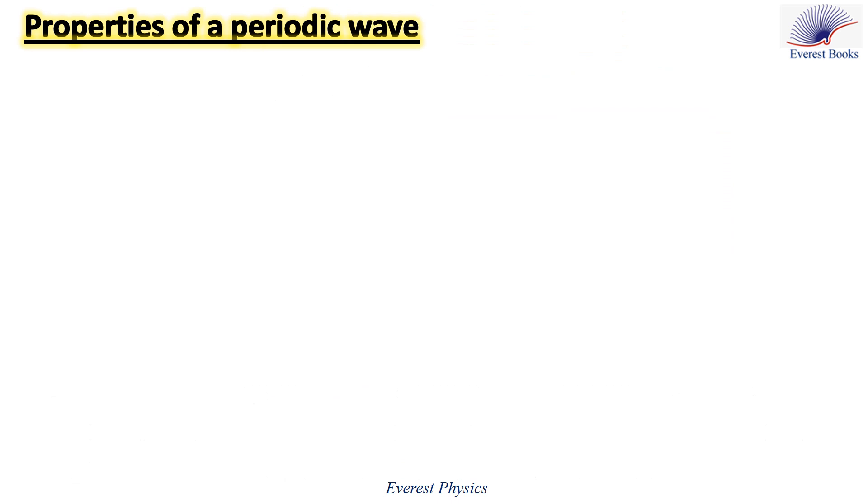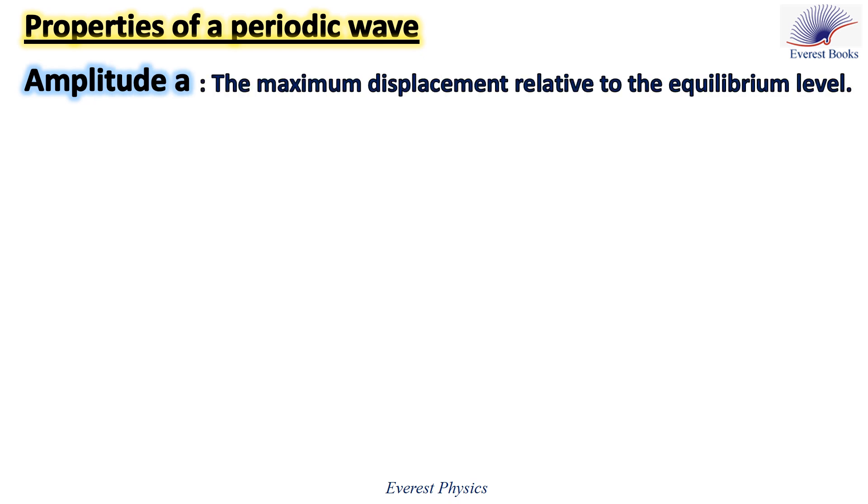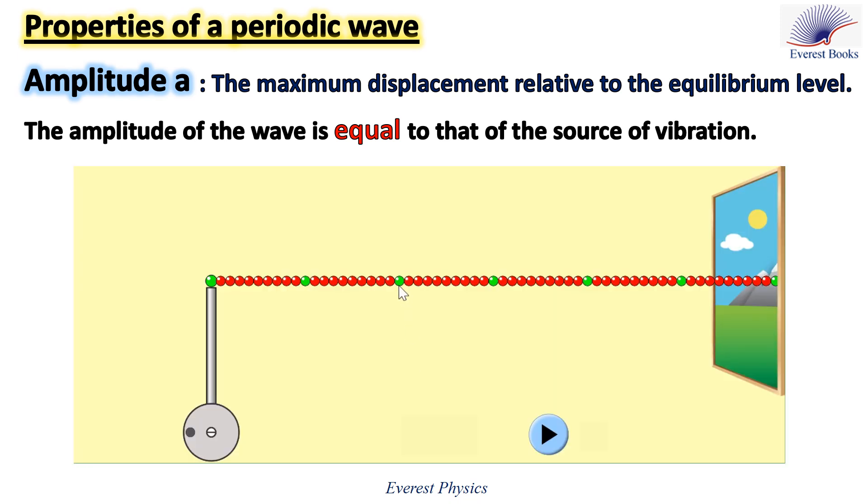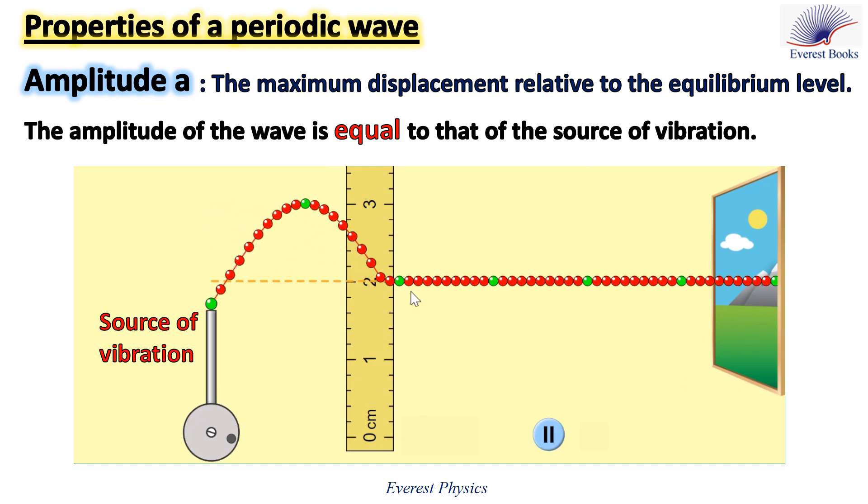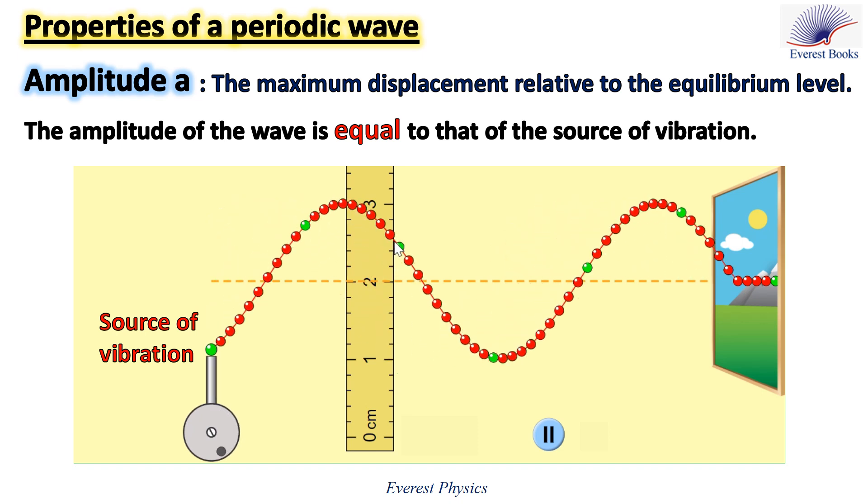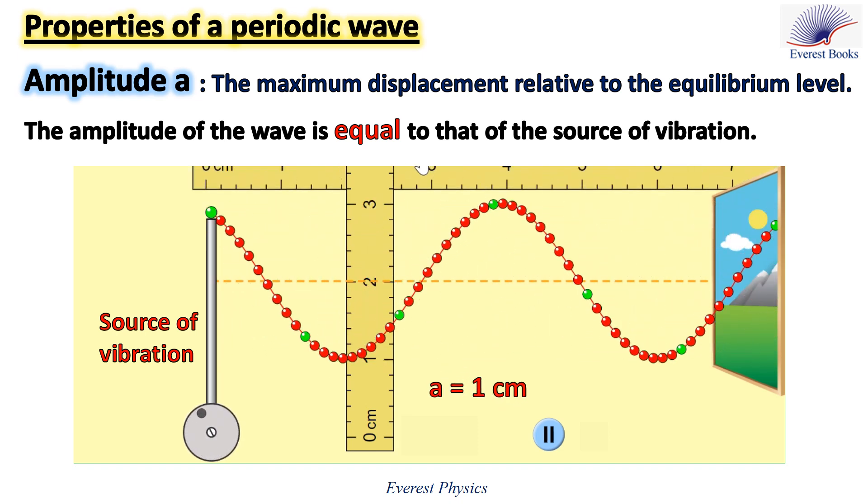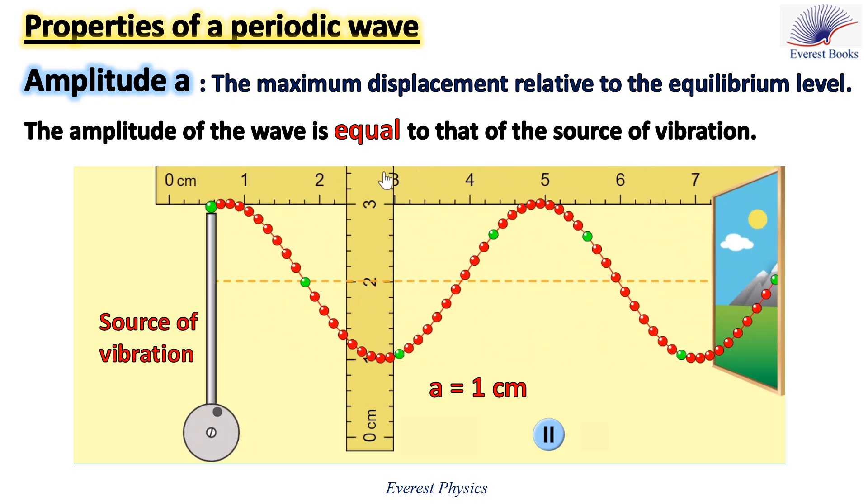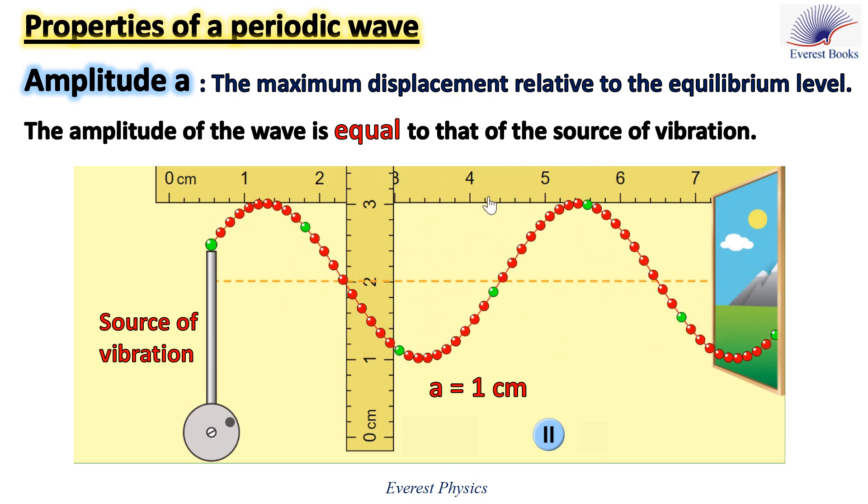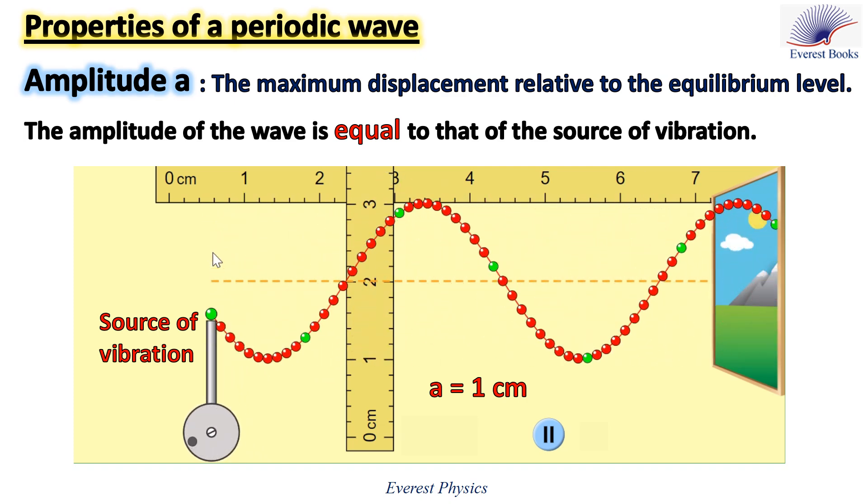Now let's discuss the properties of a periodic wave. Let's start with the amplitude which is the maximum displacement relative to the equilibrium level. The amplitude of the wave is equal to that of the source of vibration. Now, I want you to observe the oscillation of this green particle. Let's place a vertical ruler in order to measure the oscillation amplitude of this particle and the amplitude of the wave. The maximum displacement of the particle and of the wave from the equilibrium level is one centimeter. Then the amplitude is one centimeter. We place the horizontal ruler to show that the amplitude of the periodic wave is constant.